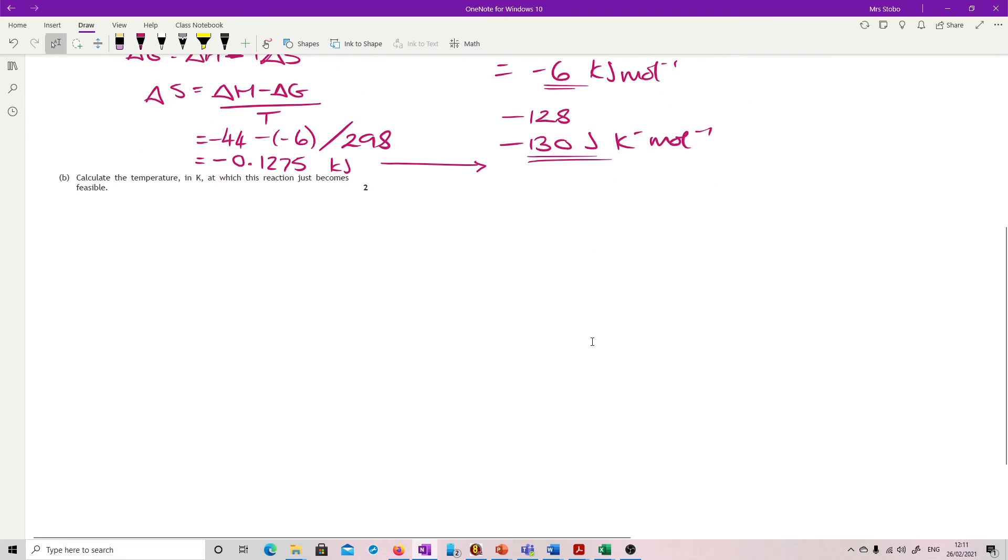Calculate the temperature in K at which this reaction just becomes feasible. So we're back to this equation again. It's the only one you've got with T in it, and you have to know that it becomes feasible when you've got ΔG equal to 0. So you're basically just wiping out ΔG and rearrange for T.